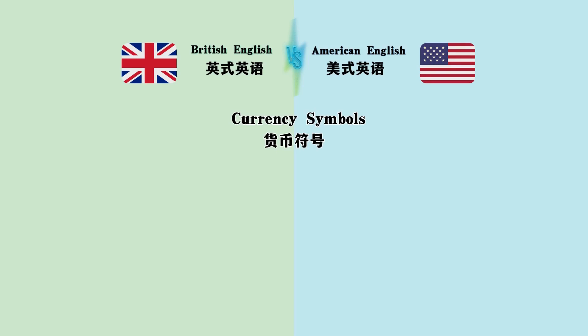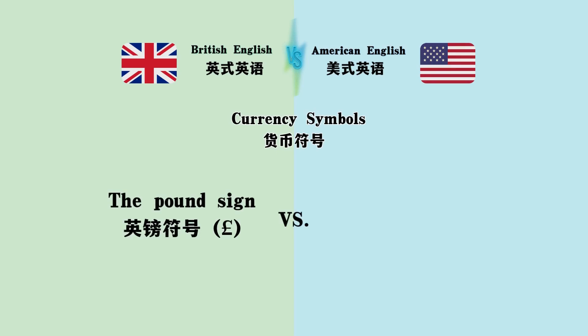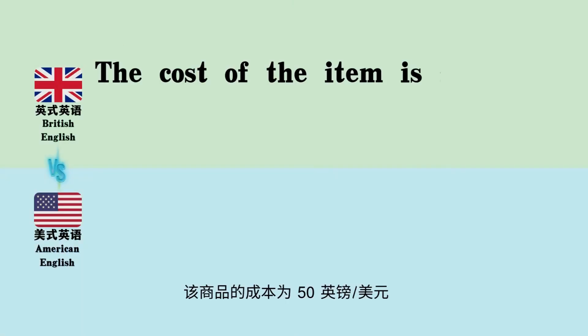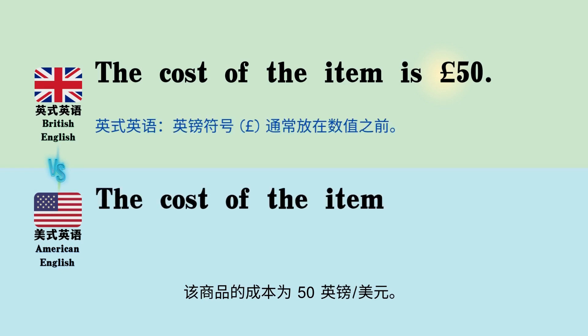Currency symbols: the pound sign versus the dollar sign. 'The cost of the item is £50' versus 'The cost of the item is $50.'